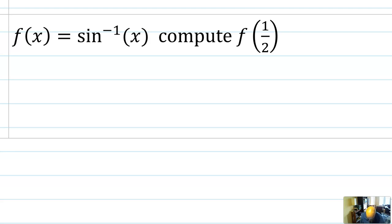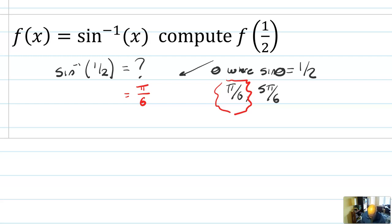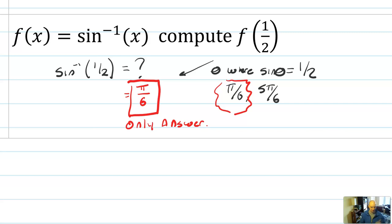So how would I solve this using the sine inverse function? I would compute sine inverse of one half. What this is saying is: find the angle where sine of theta equals one half. We already computed those angles — pi over 6 and 5 pi over 6. Just like with the square root I said plus or minus, here I'm going to select the answer closest to zero. The single answer for sine inverse of one half is just pi over 6. By selecting that one answer, everyone arrives at the same result — no one will say 5 pi over 6 as long as we follow the same rules.